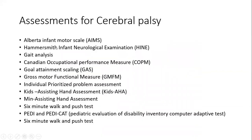There are many other assessment tools. The Alberta Infant Motor Scale (AIMS) is good for assessing children below one and a half years of life and can monitor development. The Hammersmith Infant Neurological Examination (HINE) is a very important tool in cerebral palsy. Gait analysis and many other tools are used to assess these children.